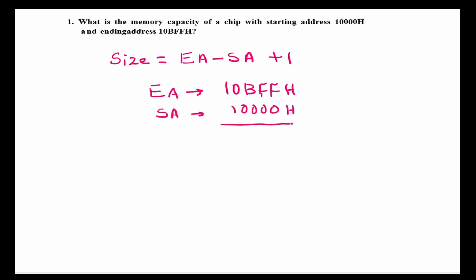Now, you subtract this. So, F minus 0 is F, F minus 0, F, B minus 0, B, here 0, here 0.